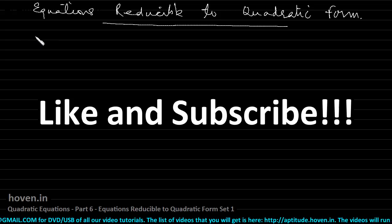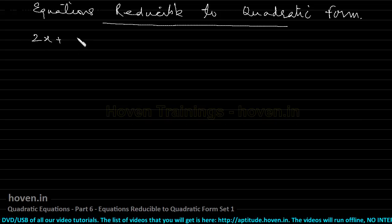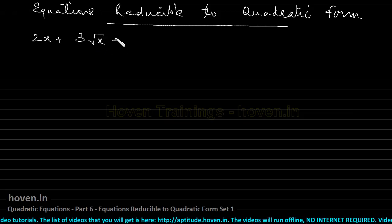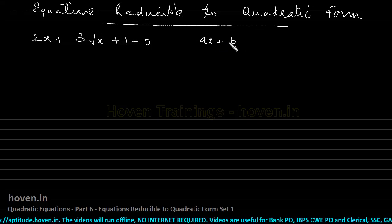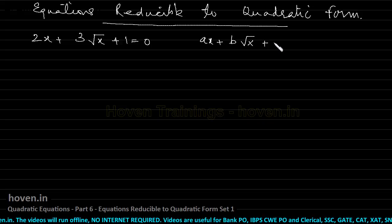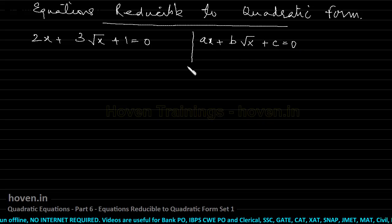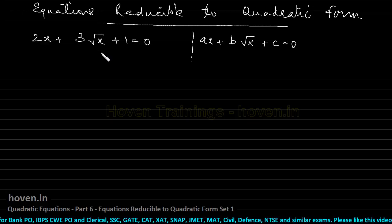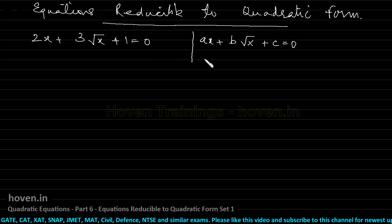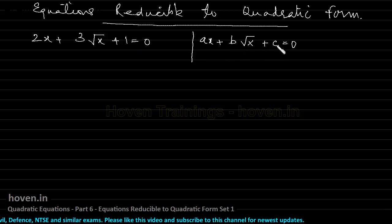For example, let us see this equation: 2x + 3√x + 1 = 0. This is one type of equation. The standard form could be like ax + b√x + c = 0. If you find an equation that has x as well as √x, then this equation can be easily converted to quadratic form. This is not a quadratic equation at first sight, but it can be converted. The general form is: some constant multiplied by x, plus some constant multiplied by √x, plus c equals 0.